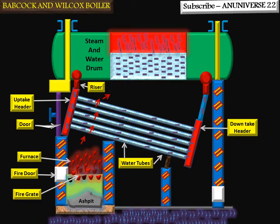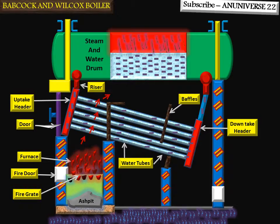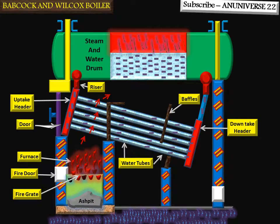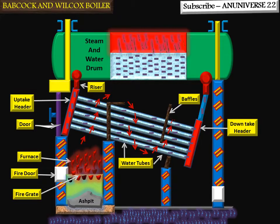Baffles are arranged across the water tubes to provide gas passes, and these also act as deflectors. Baffles divert the flue gases so they flow more than one time through the tubes, and more heat is transferred. Here, two baffles are arranged which provide three passes of flue gases.